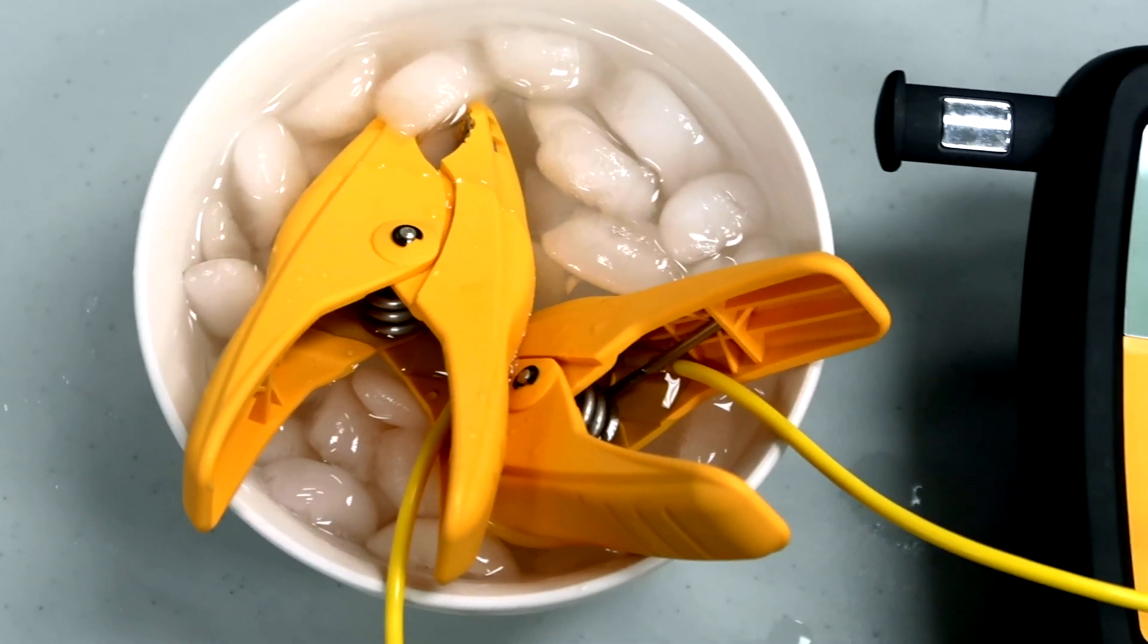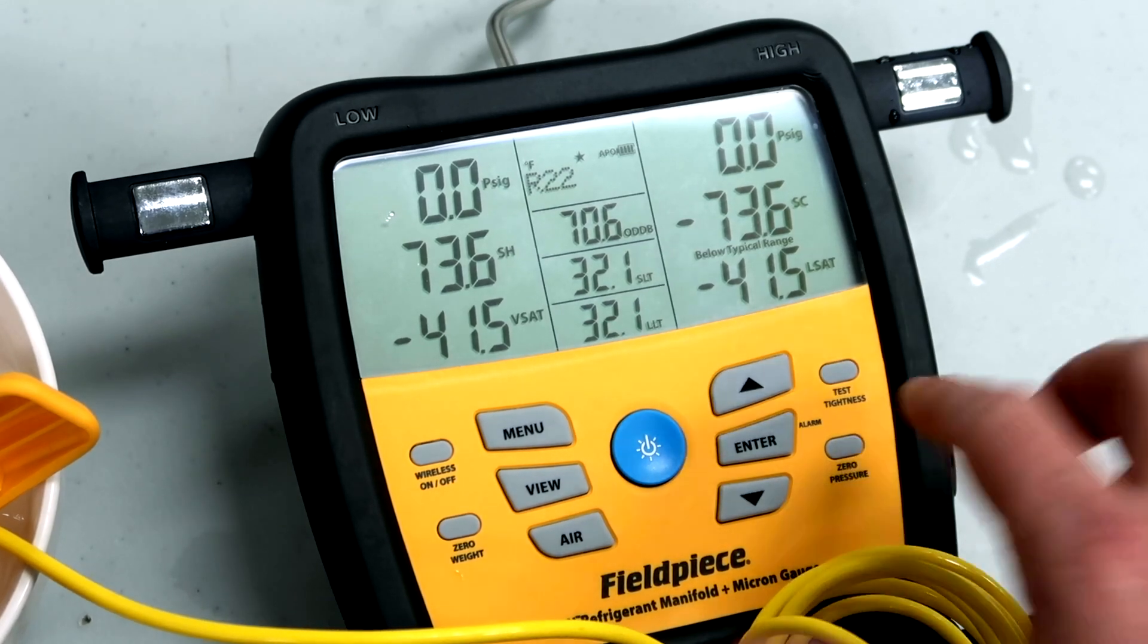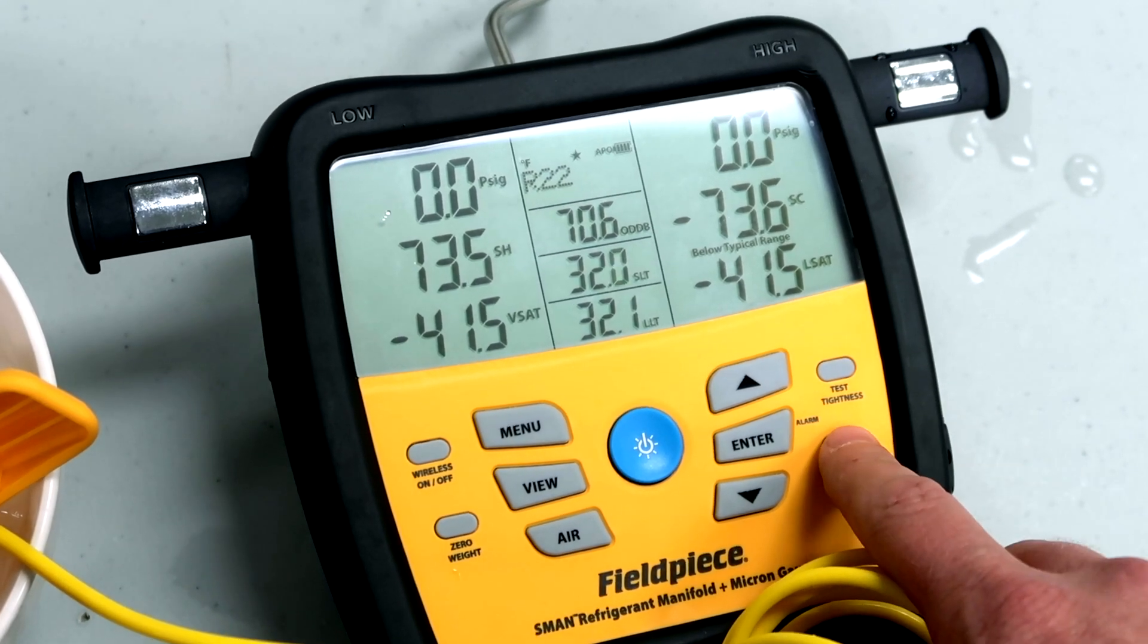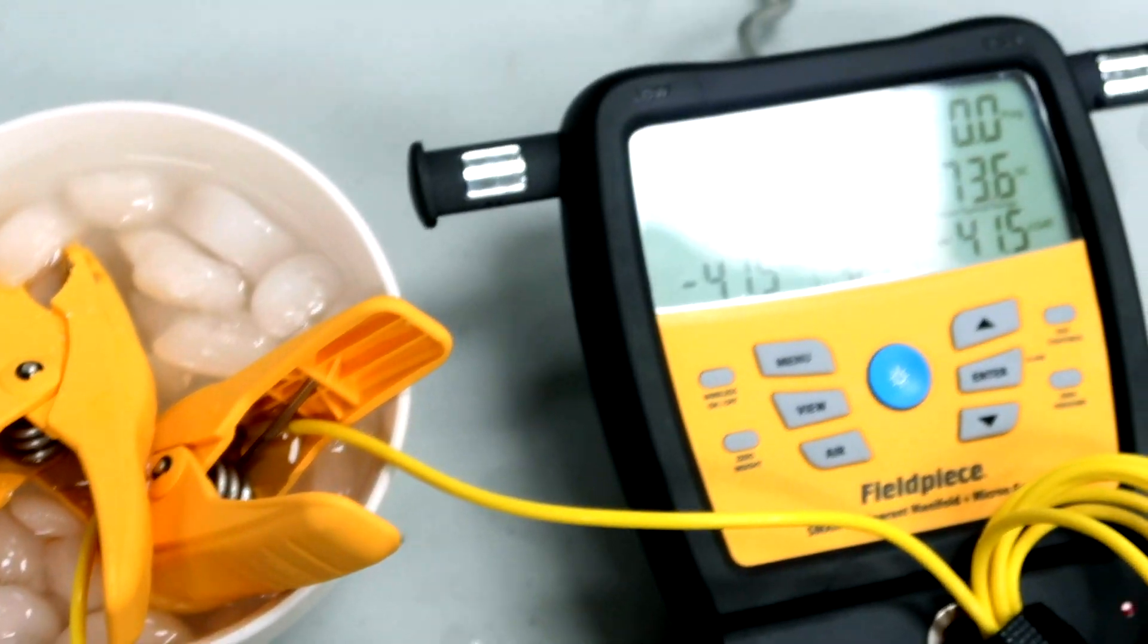If we want to zero out the pressure on this particular manifold, all we do is make sure that the hoses are all open and then we hit the zero pressure button to zero it out. Very simple. I like what Fieldpiece has done with this and how simple they've made it.